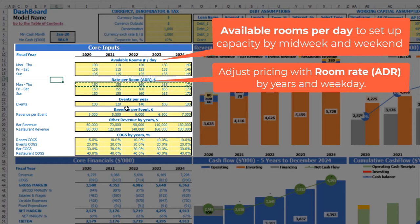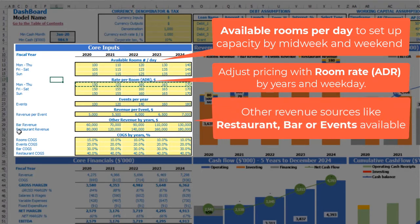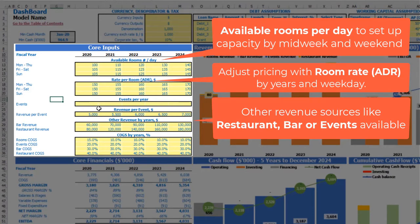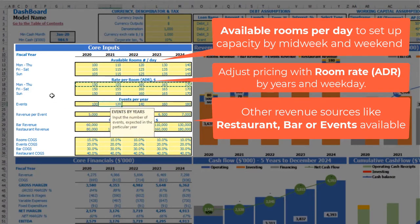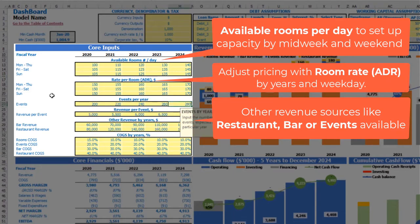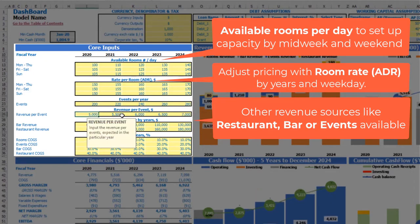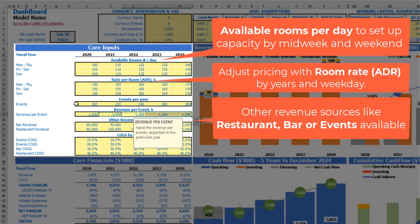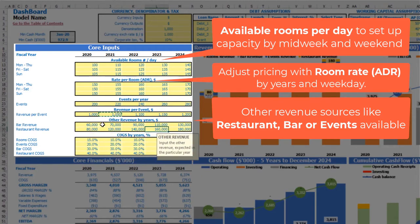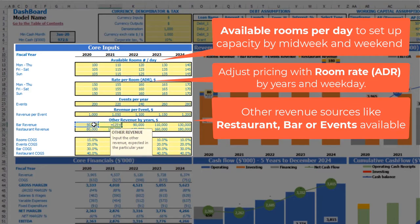The next step is to set up your other revenue, which includes events revenue and bar and restaurant revenue. If you don't have events in your hotel you can just clear those assumptions. If you do, you can adjust the count of events per year — for example 200, 220, 240, 260, 280 — and the average revenue per event, say $1,000 plus $50 each next year. For bar and restaurant revenue, just set up your total annual amount, for example $50,000 plus $5,000 each next year.